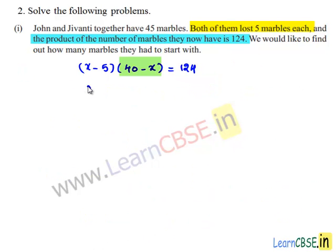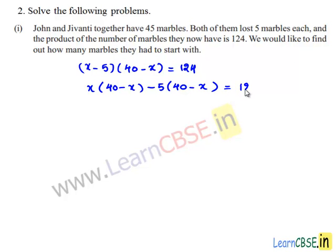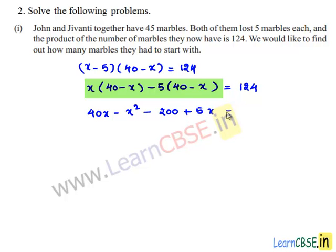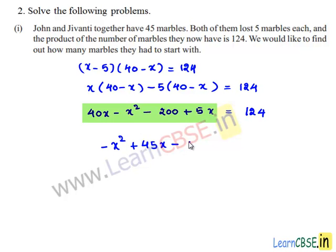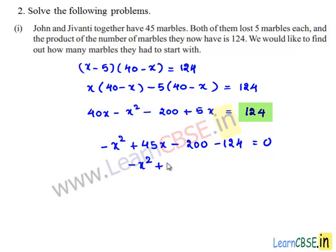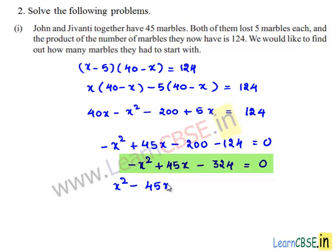This can be written as x times (40 minus x) minus 5 times (40 minus x), which expands to 40x minus x squared minus 200 plus 5x is equal to 124. Transposing 124 to the left hand side gives minus 124 equal to 0.